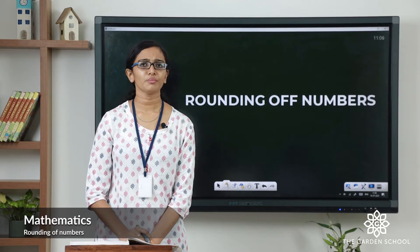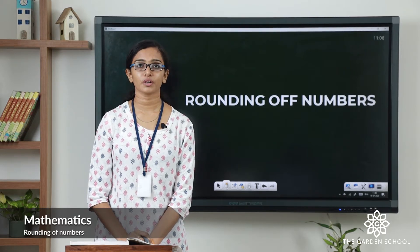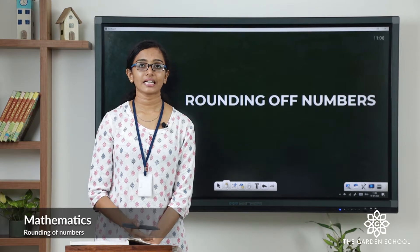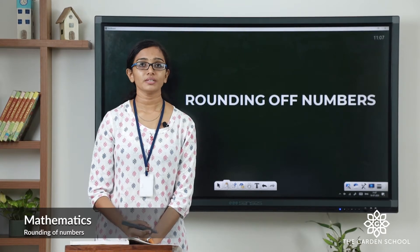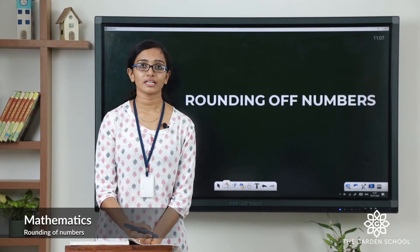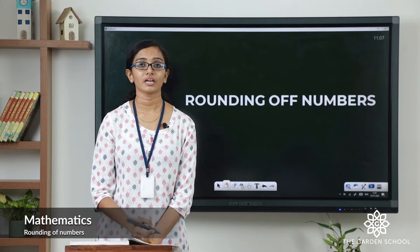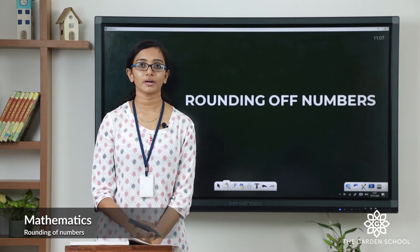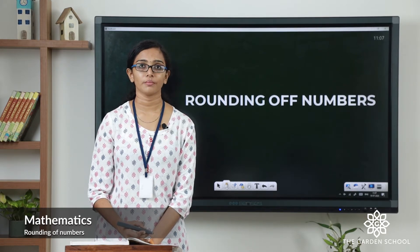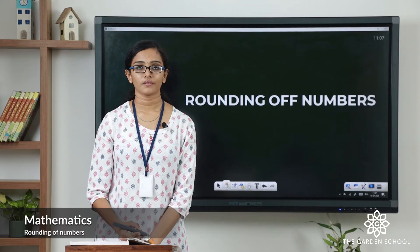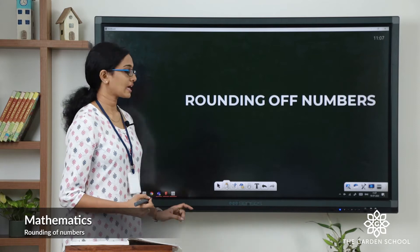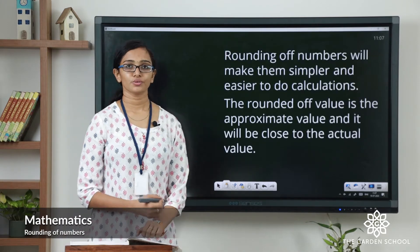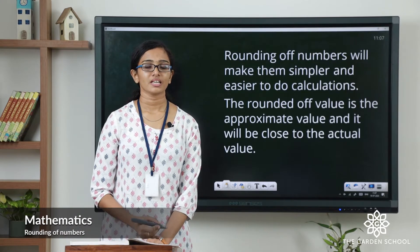What do you mean by rounding off? Suppose someone is asking you how many people are living in your village. You'll say there are about or around 5,000 people or 10,000 people and so on. You will tell them an approximate number or rounded off number. It's not the actual number but it will be closer to the actual number. This is called rounding of numbers.